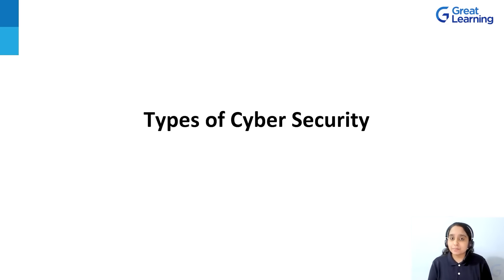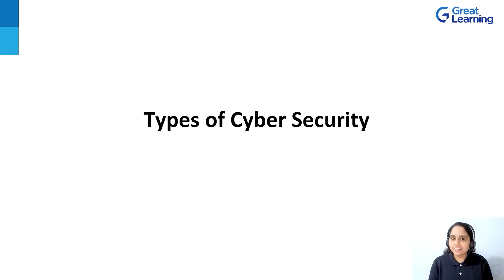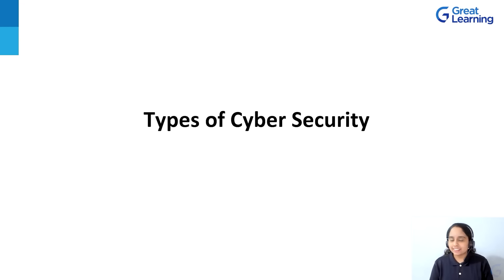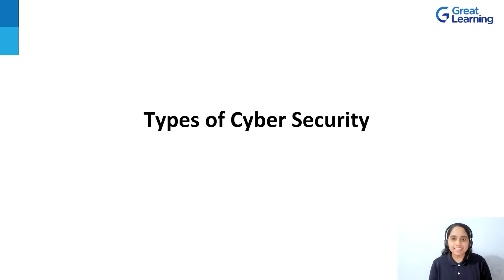Let's discuss the six major types of cybersecurity. The first one is network security. Second is information security. Third is application security. Fourth is cloud security. Fifth is internet of things security. Last but not least, the sixth one is mobile security.